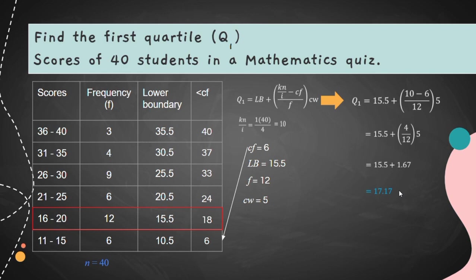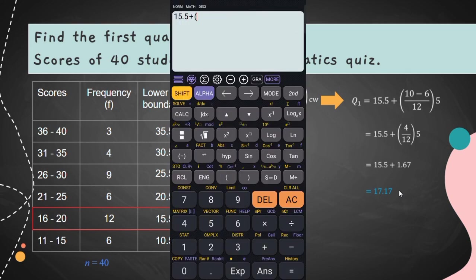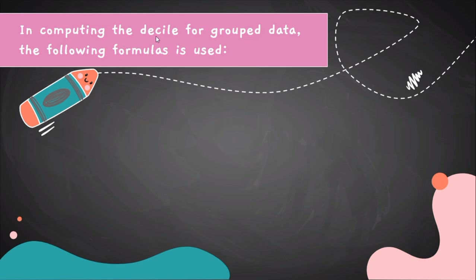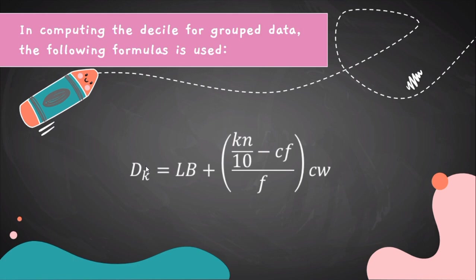You can use a calculator to speed up the computation — just input the formula with the given values: 15.5 plus open parenthesis 10 minus 6 over 12 close parenthesis times 5. In computing the decile for grouped data, the same formula is used, but I is equal to 10 since we are looking for the decile.